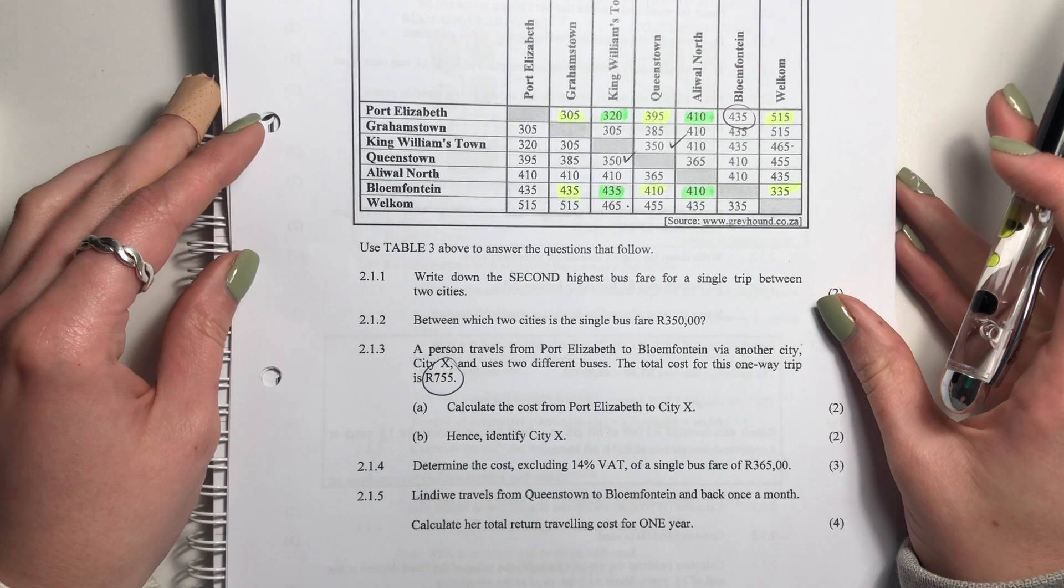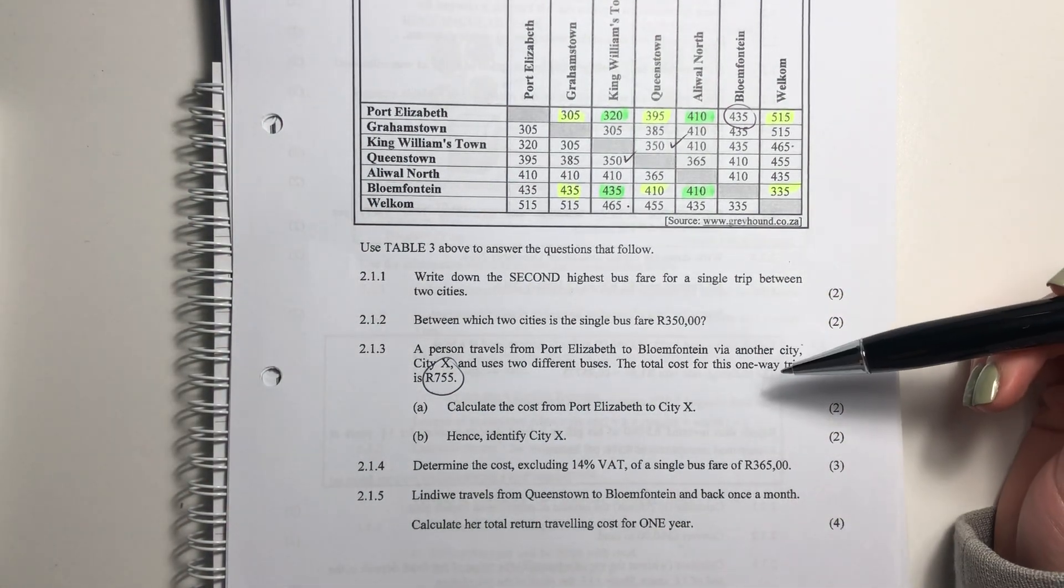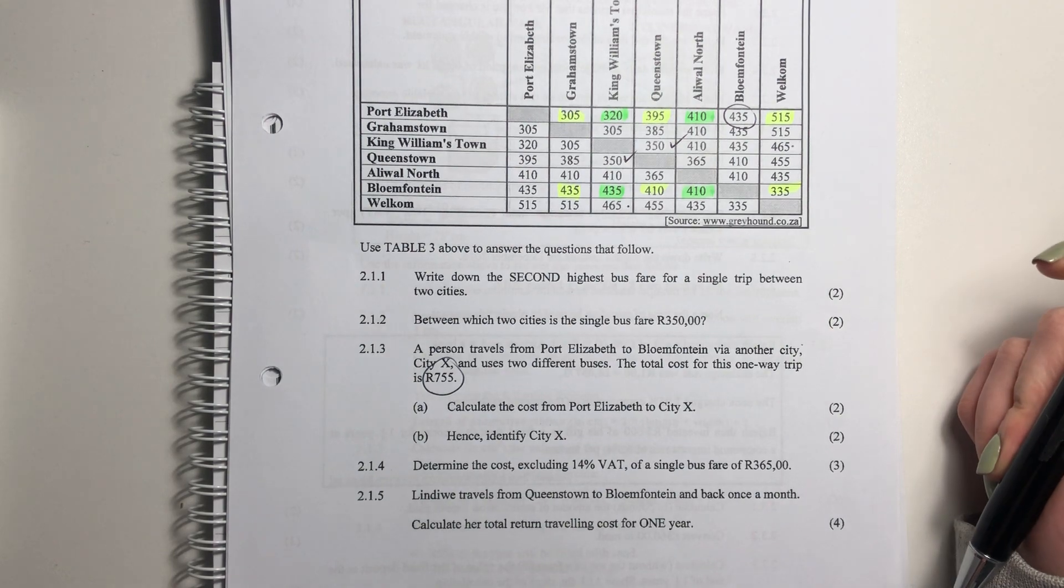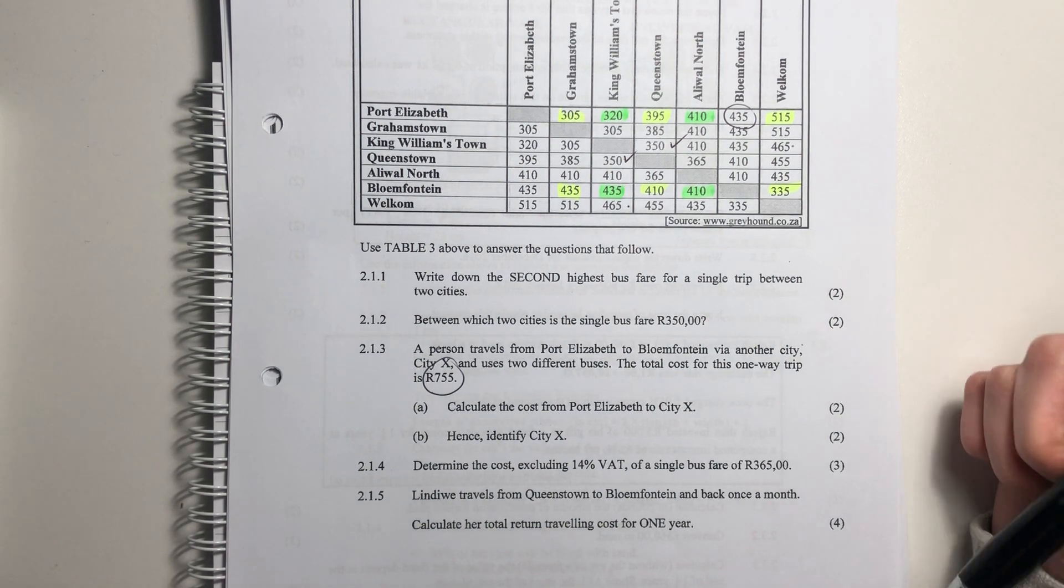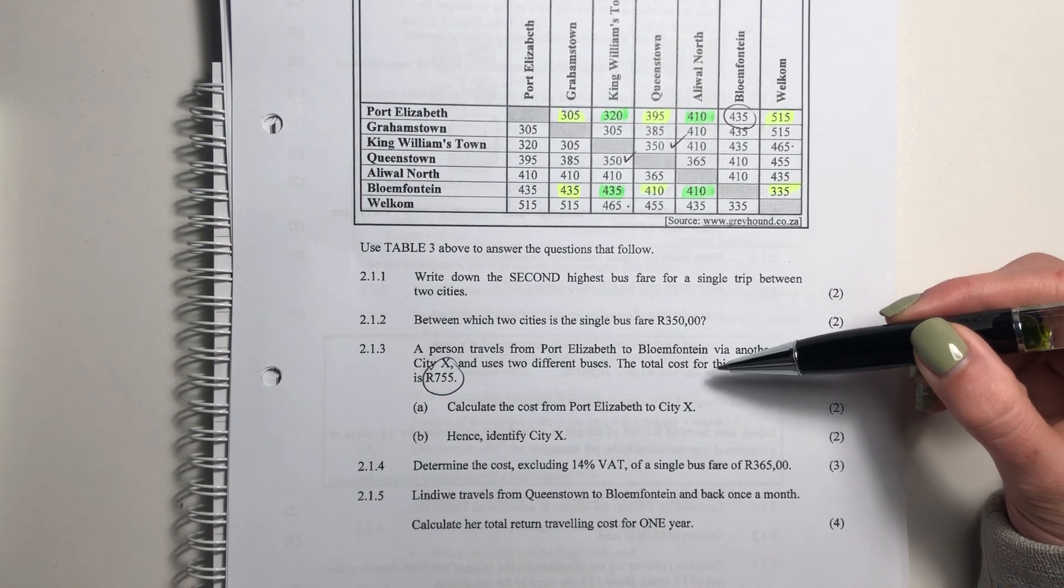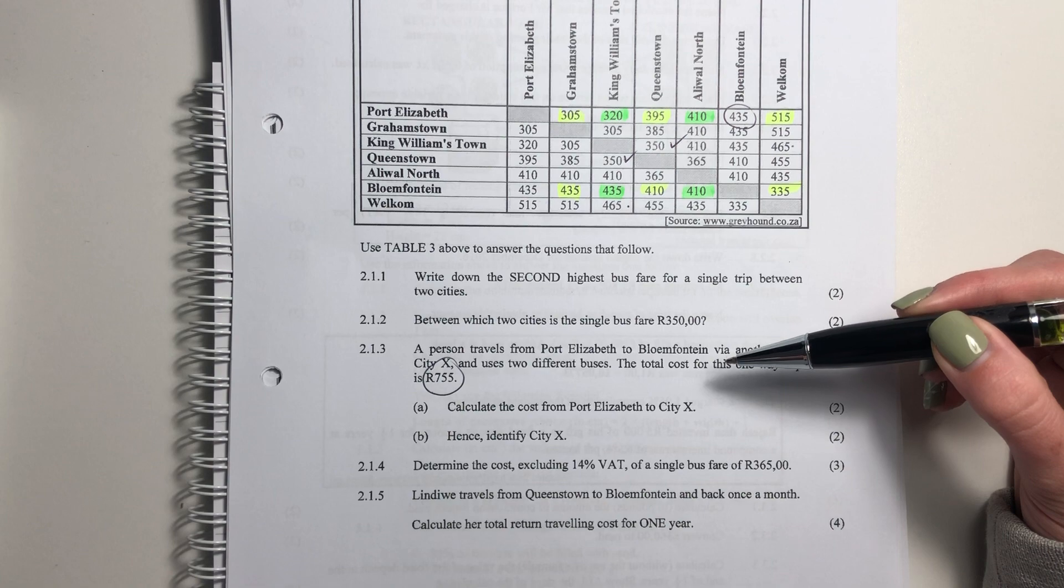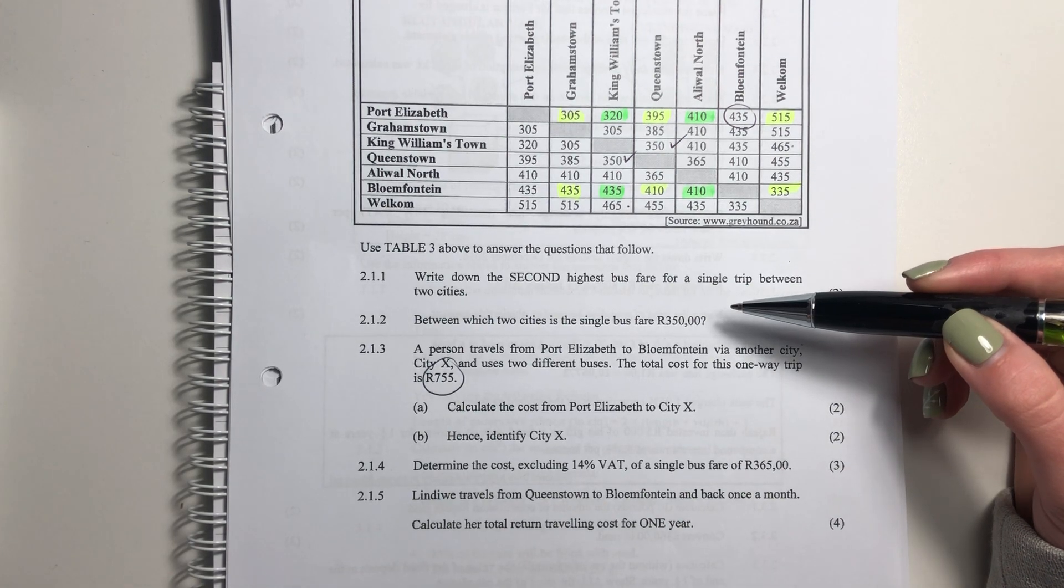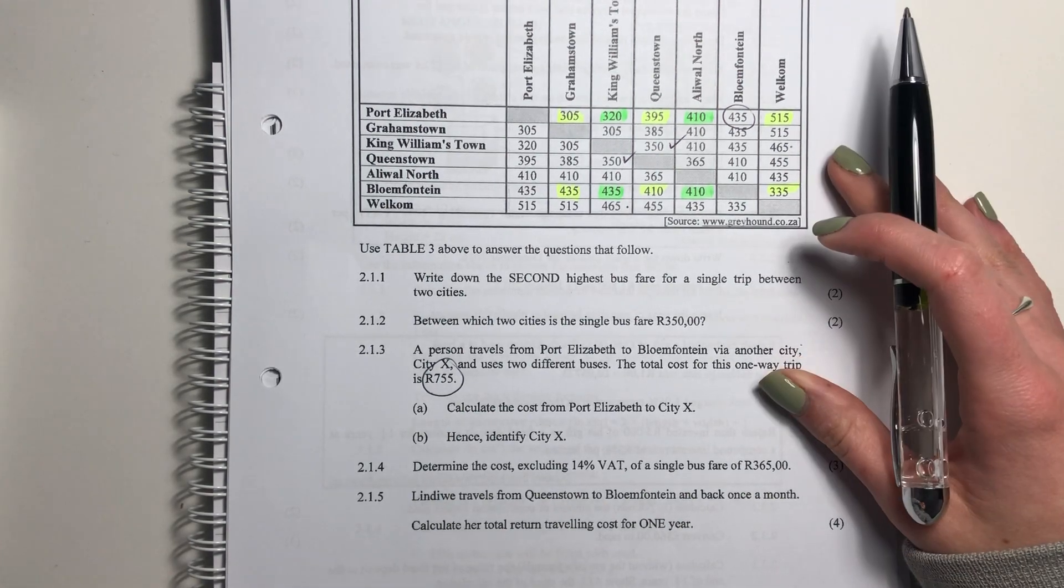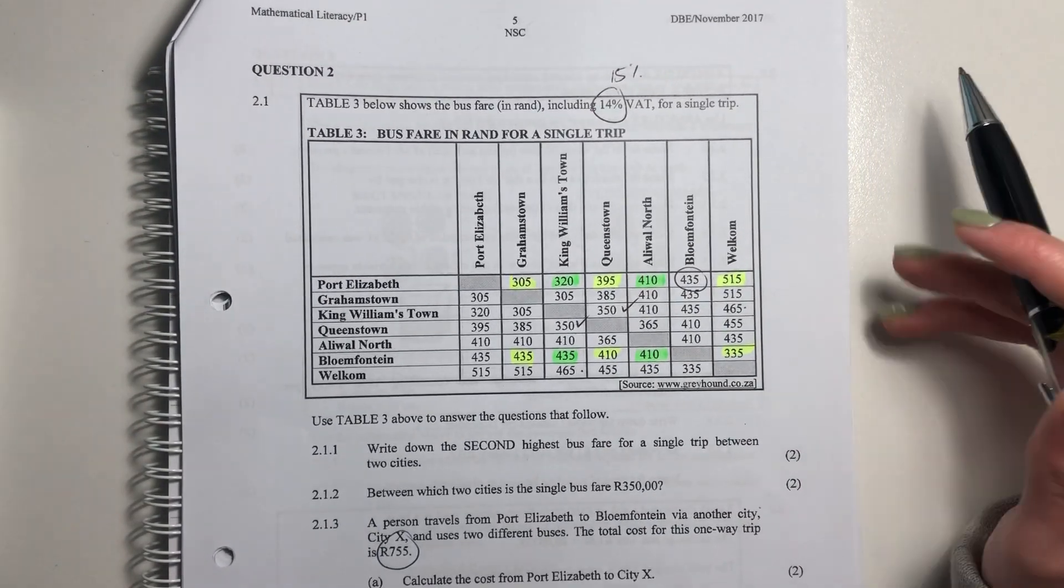I'll move on to the slightly meatier questions. A person travels from PE to Bloemfontein via another city, City X, and uses two different buses. So they go PE, City X, City X, Bloemfontein. The total cost for this one-way trip is 755 rand. Calculate the cost from PE to City X. Now, the way that the memo's done this, I don't agree with. So I'm going to show you how I would do this because it's the most logical way.